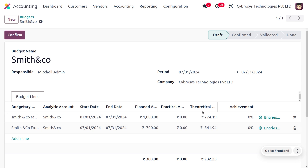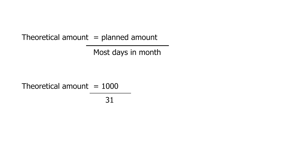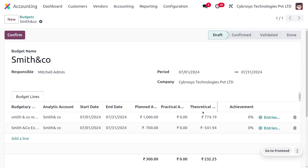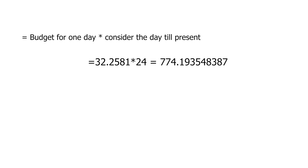After saving, you can find the theoretical amount. The equation for calculating the theoretical amount is: planned amount divided by number of days in the month. This month has 31 days. For revenue, 1,000 divided by 31 gives 32.258 per day. To get the theoretical amount up to today (the 24th), multiply by 24, giving a result of 774.19.